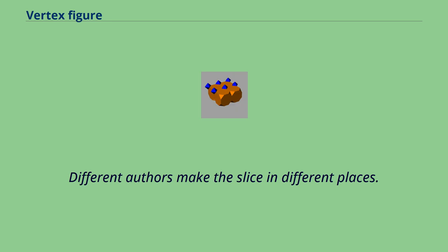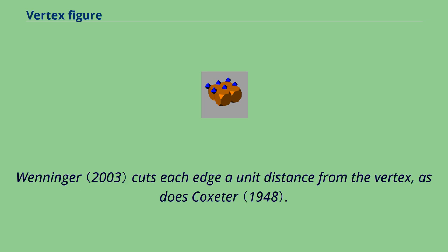Different authors make the slice in different places. Wenninger cuts each edge a unit distance from the vertex, as does Coxeter.